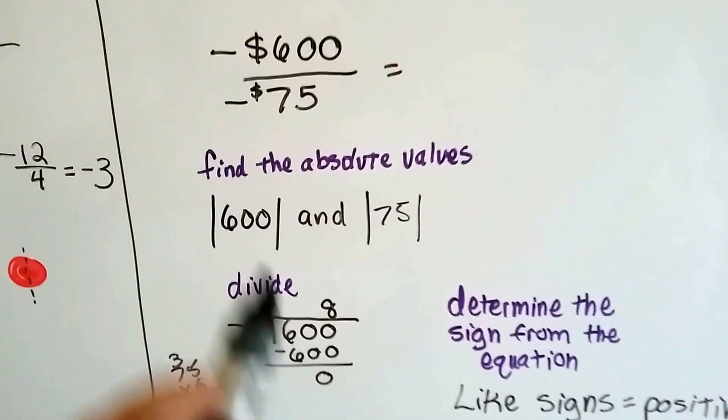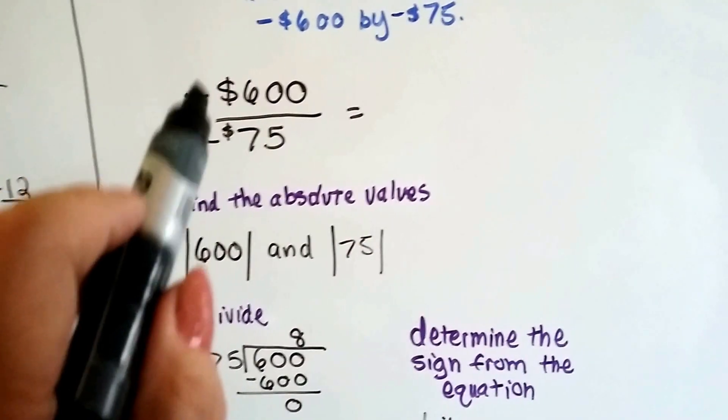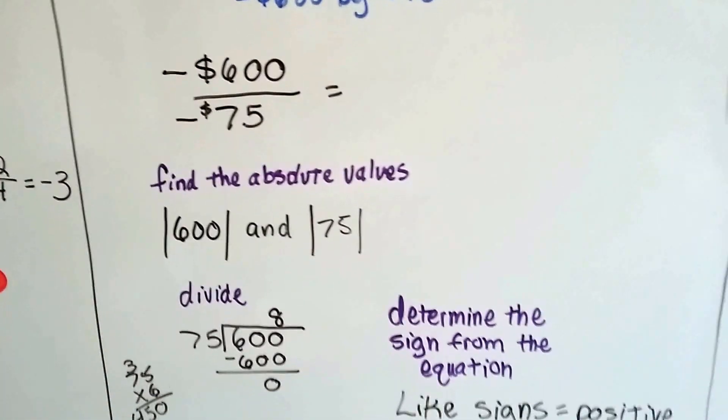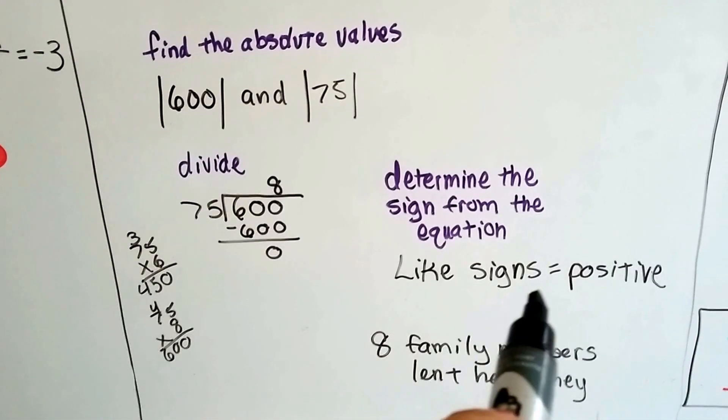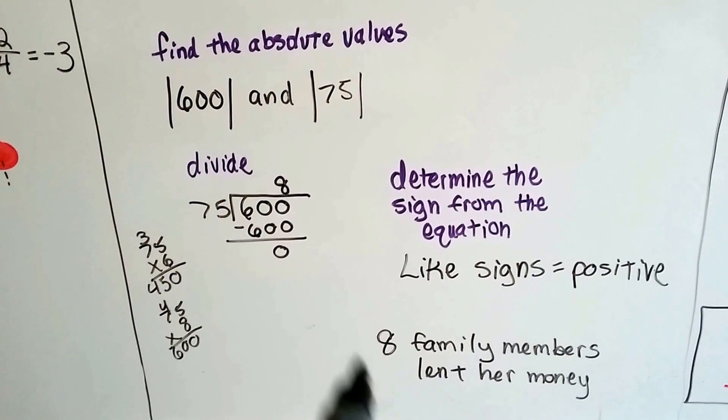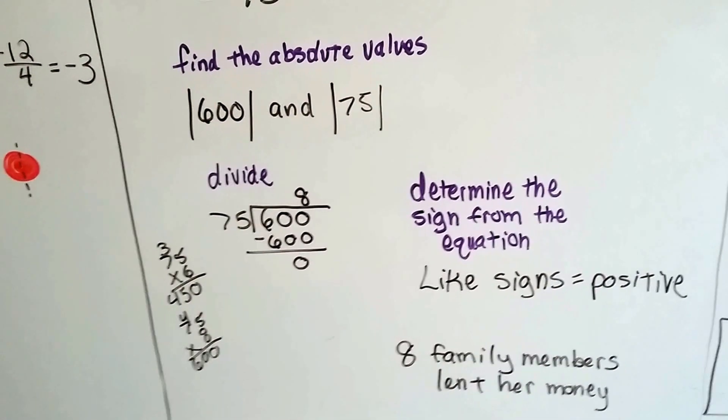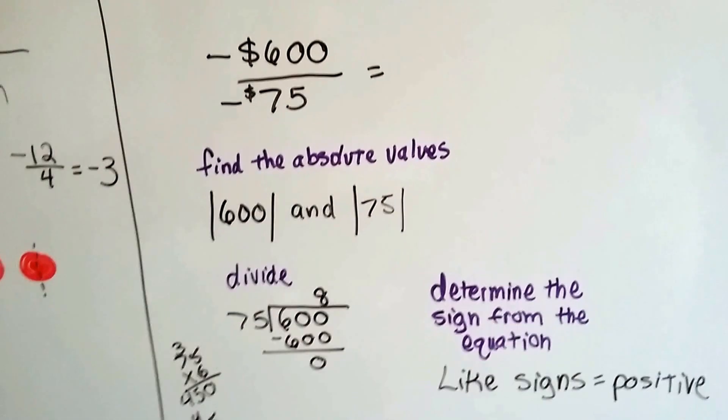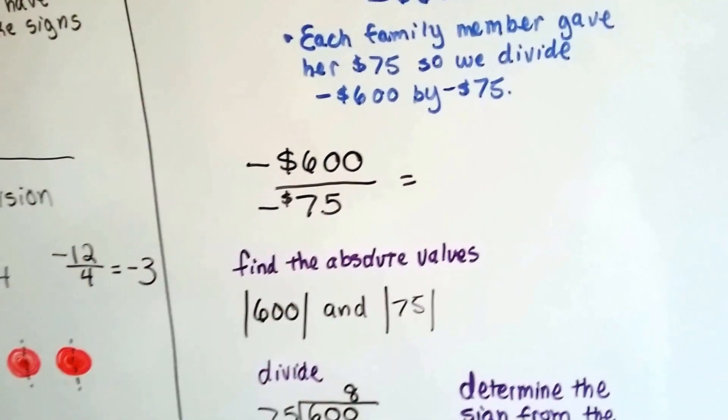But is it positive or negative? Well, remember, we had two negatives in the equation. So that means they're like signs, so the answer is positive. She owes 8 family members money. See? She owes them each 75.